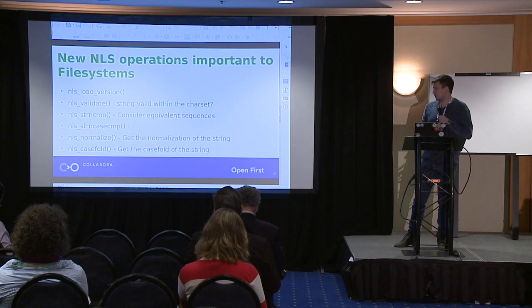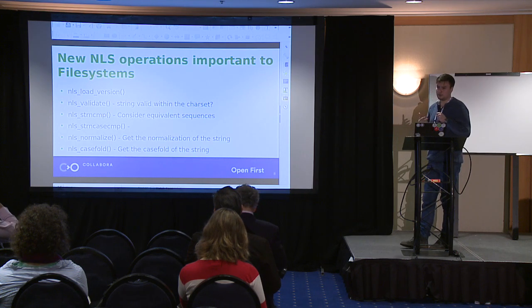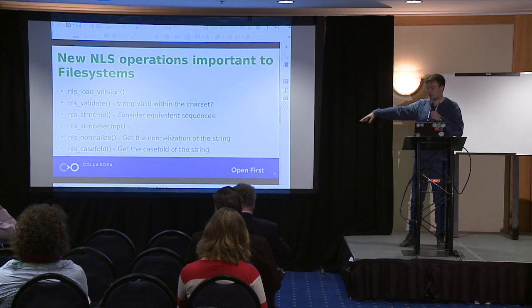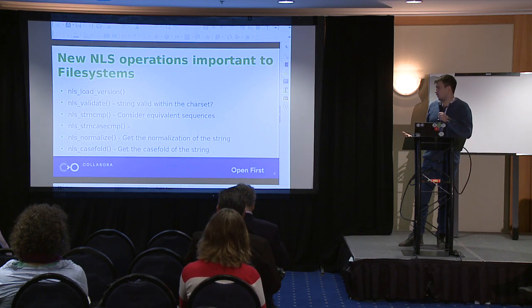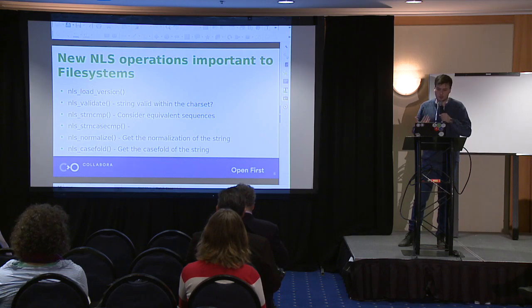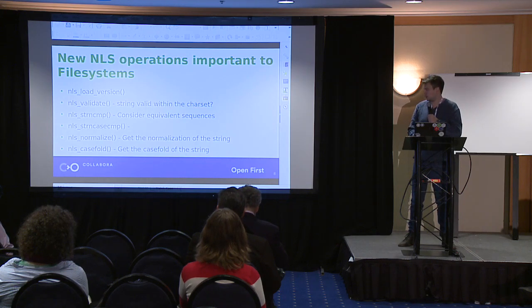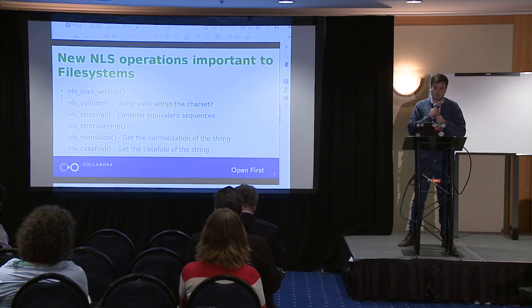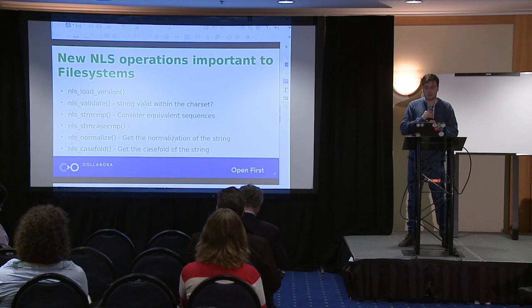So the API looks a bit like this — it's a very high-level API. I'm providing string comparison and string case comparison instead of to_upper and to_lower because this can abstract all the multibyte handling. We also need a mechanism to validate strings in case we want to reject them at file creation time inside the file system. And the normalization and case fold interfaces are going to be directly used for hashing both in the dentry cache and in the file system.